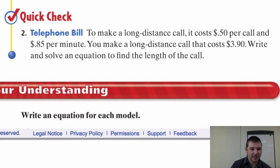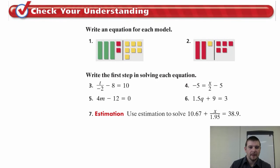And now it's time for a quick check problem. Number two, telephone bill. To make a long distance call, it costs 50 cents per call and 85 cents per minute. You make a long distance call that costs $3.90. Write and solve an equation to find the length of the call. And now for the check your understanding problems. Write an equation for each model in problems 1 and 2. In problems 3 through 6, write the first step in solving each equation. And in problem 7, estimation. Use estimation to solve 10.67 plus x over 1.95 equals 38.9.